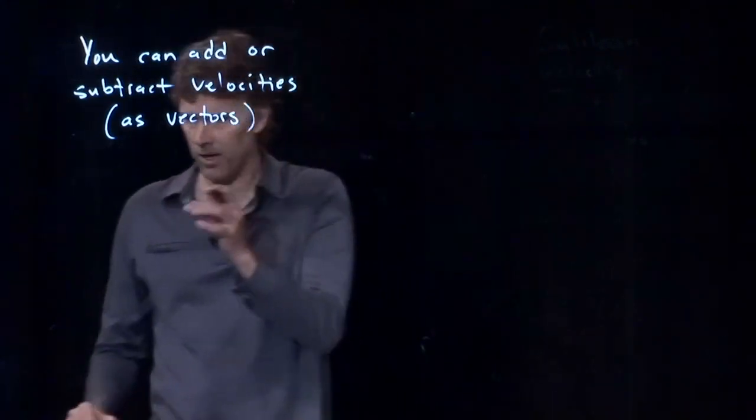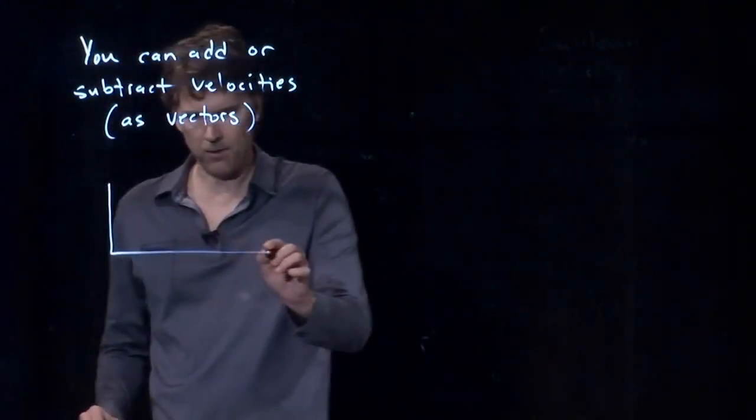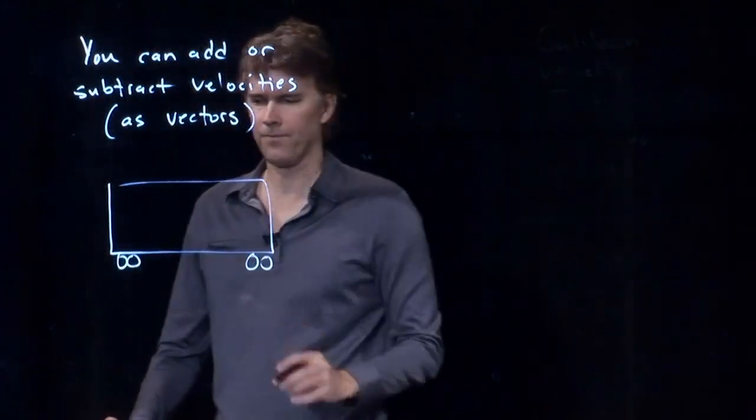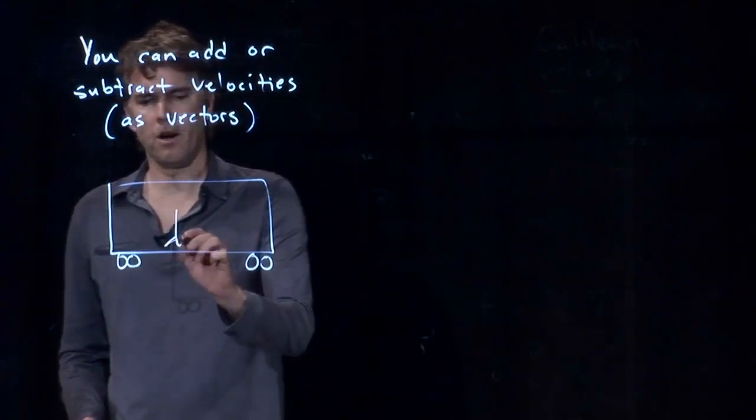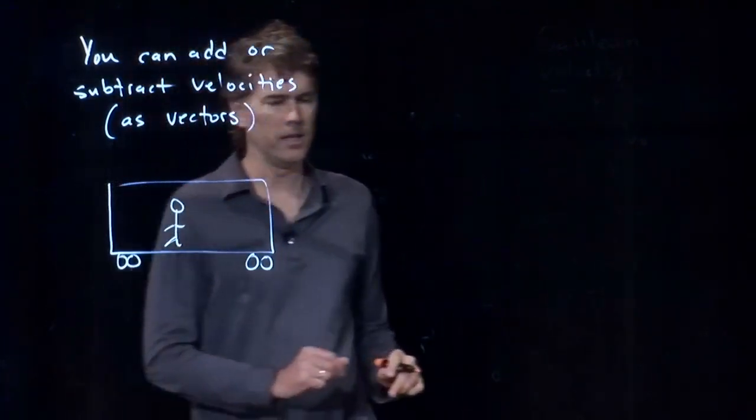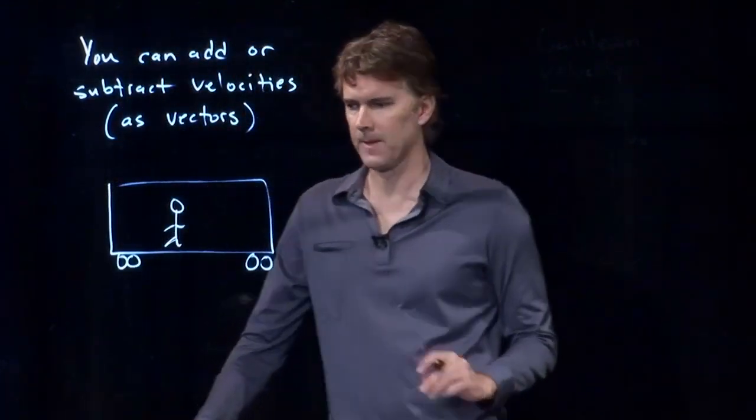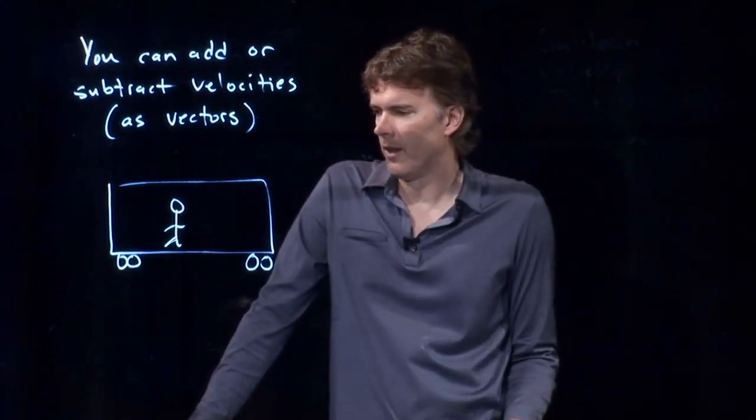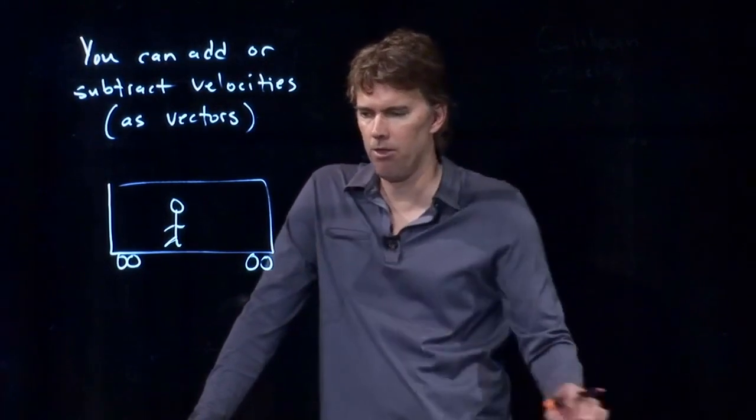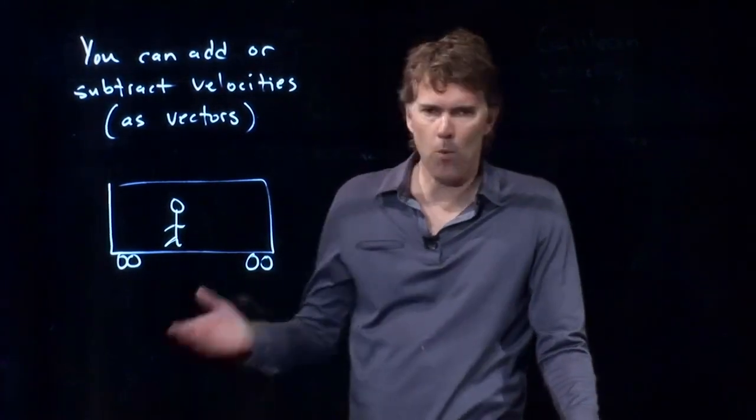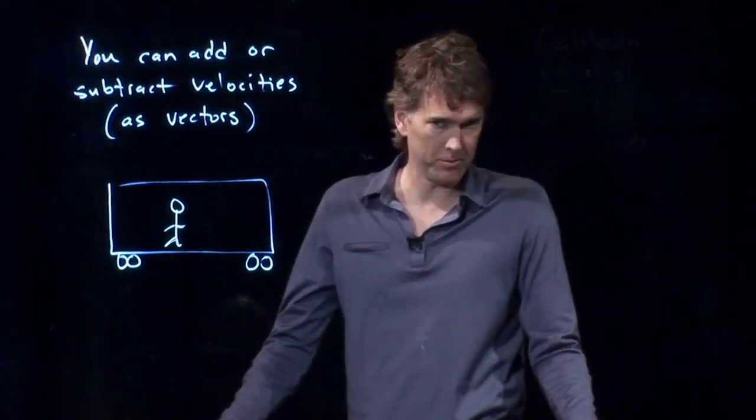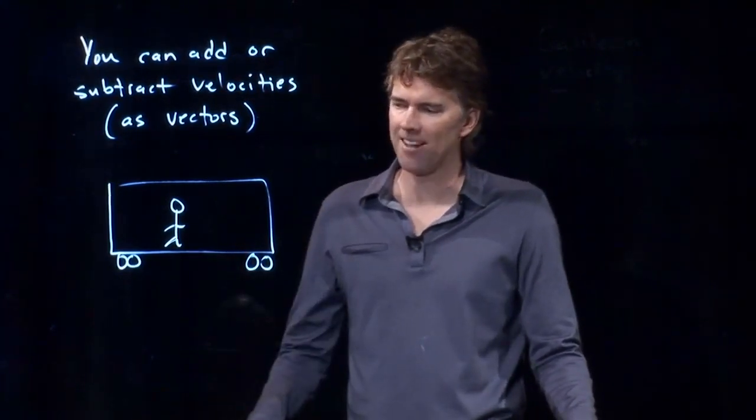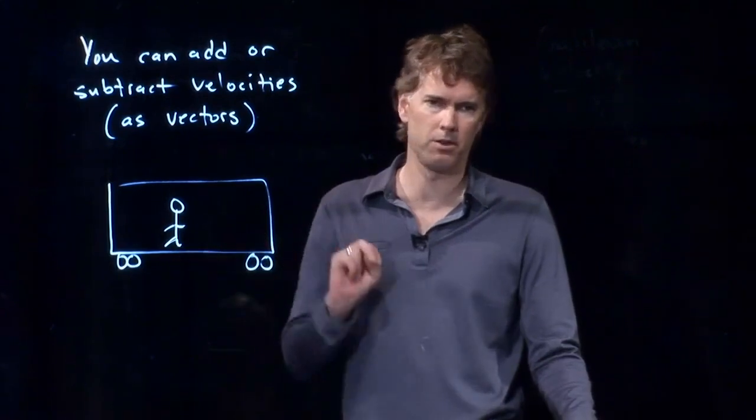So let's try the following example. Let's say that we are standing on a train, and now we are walking inside that train. And you probably already know the answer to this, but if the train is moving at 30 miles per hour and I'm walking inside it at 10 miles per hour, what's the velocity of me relative to the Earth?